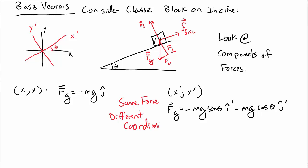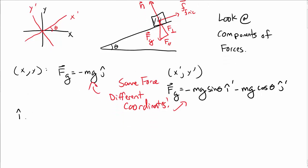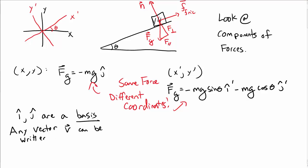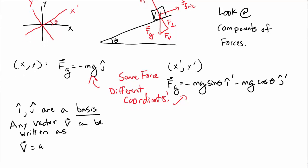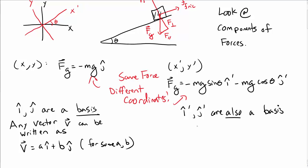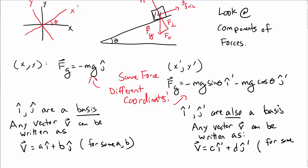The point is that I can use two different bases. In particular, I can use the i-hat, j-hat set of unit vectors — that is a basis. What I mean by that is that any vector v can be written in terms of this basis: some coefficient a times i-hat plus some coefficient b times j-hat, where a and b are constants I can figure out. But i-hat-prime and j-hat-prime are also a basis — I can write any vector v as c times i-hat-prime plus d times j-hat-prime.